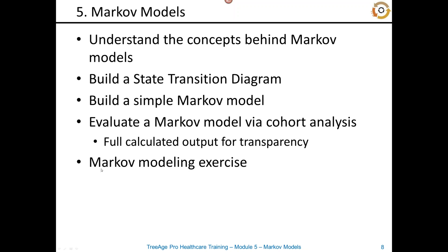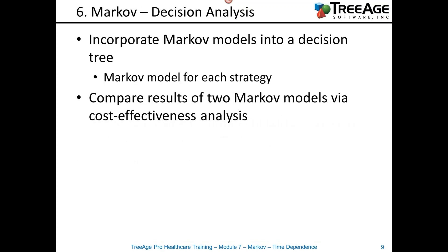We do another modeling exercise where you independently build a fairly simple cancer progression model using the Markov framework. That brings us to module six, where we take what we learned about Markov models and introduce it back into decision analysis — having a decision tree with a Markov model for each strategy. All the calculations that the Markov model needs result in a single average cost and effectiveness per strategy, which we then use with the cost-effectiveness analysis from day one to draw a conclusion about what the optimal strategy is.